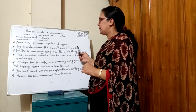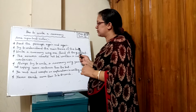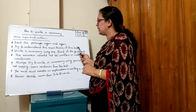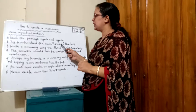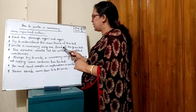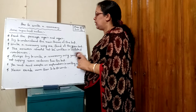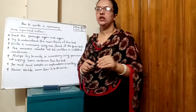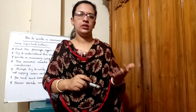Try to understand the main theme of the text. The main theme of the text is key. Write the summary using one-third of the given text. That is the first rule for writing a summary.